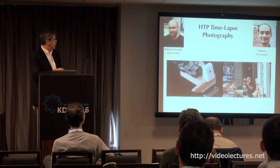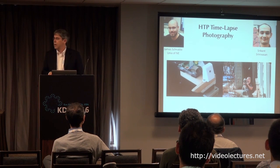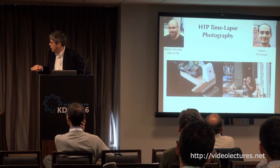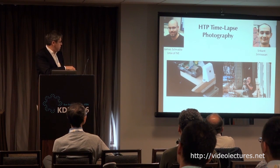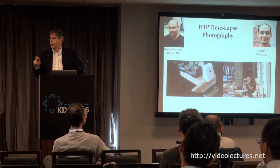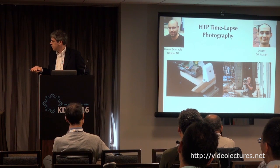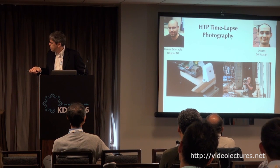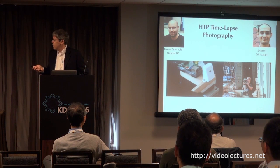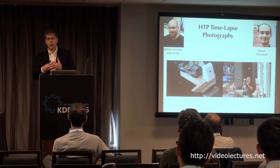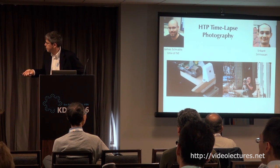My son James Schnabel, an assistant professor at the University of Nebraska, built this prototype high-throughput time-lapse photography technology. Here you see a Raspberry Pi computer — $25 to $30 — connected to a very inexpensive cell phone camera. On board there's an SD memory card as well as a Wi-Fi system, so we can either collect images on the SD card or send the data to a server. You can program the Raspberry Pi to take a picture every 10 minutes, which is what James did.